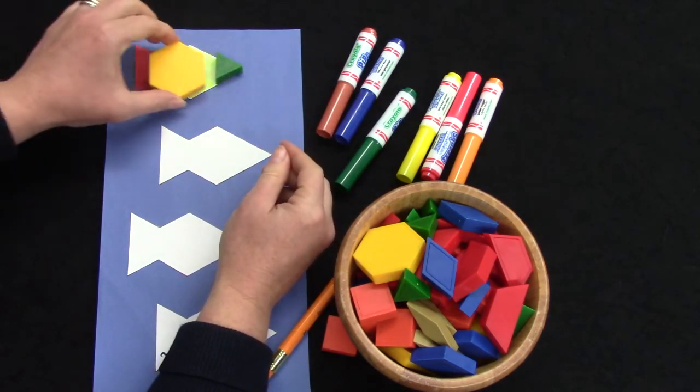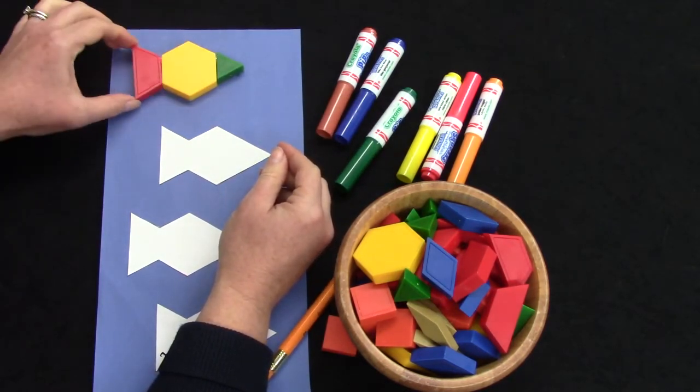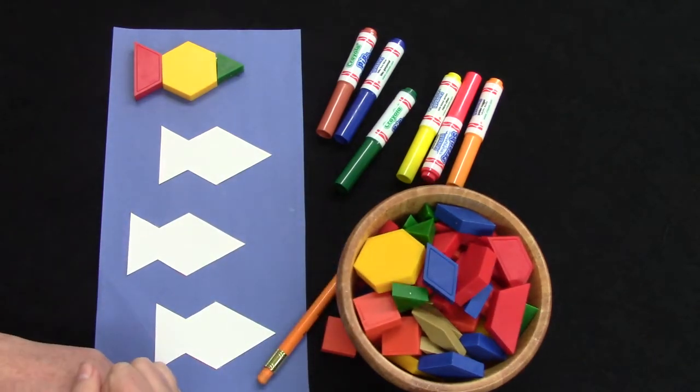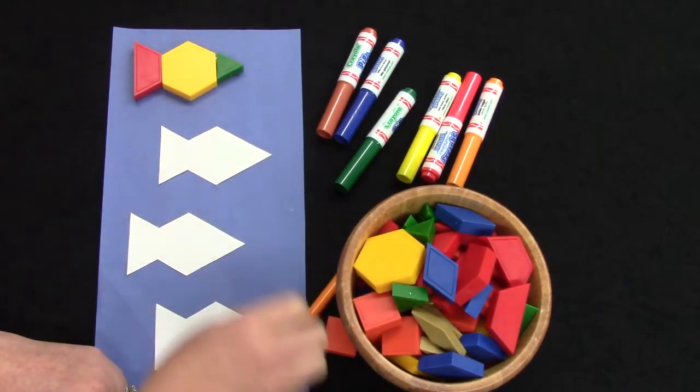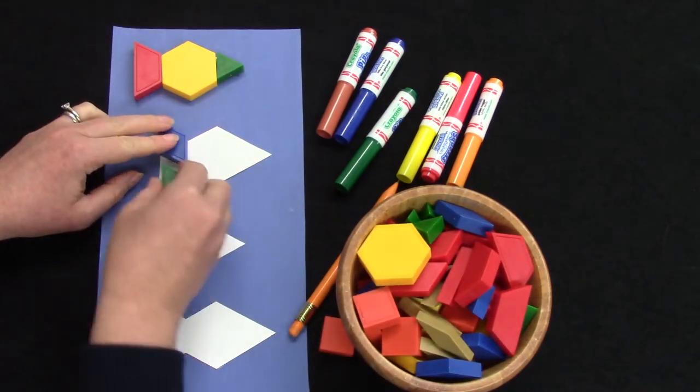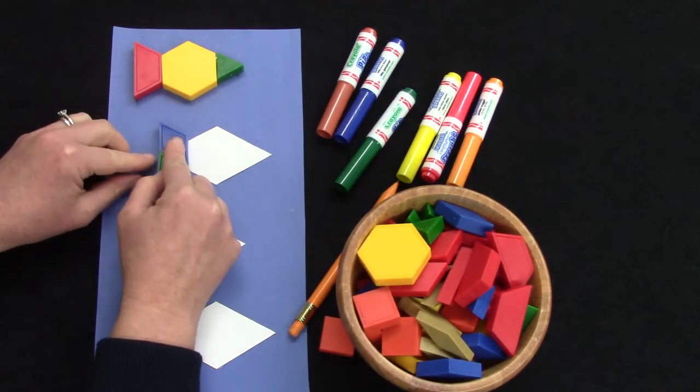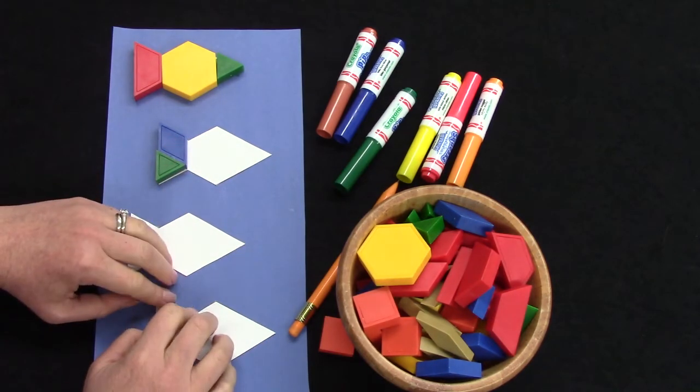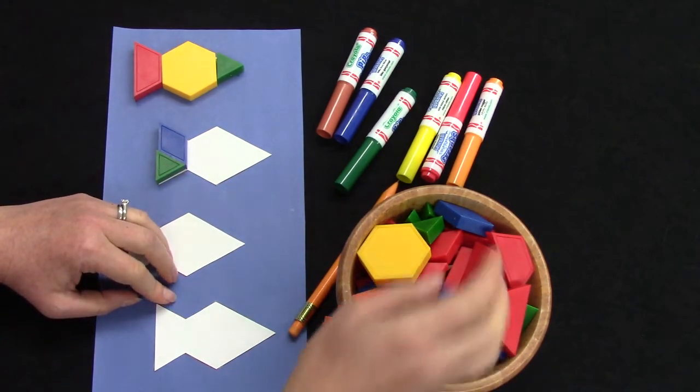My triangle, my hexagon, and my trapezoid. What's another way that I could design this little fish? The rhombus and the triangle for the tail of the fish. I think I'm going to try to make this one have as much blue and green in it as I can.